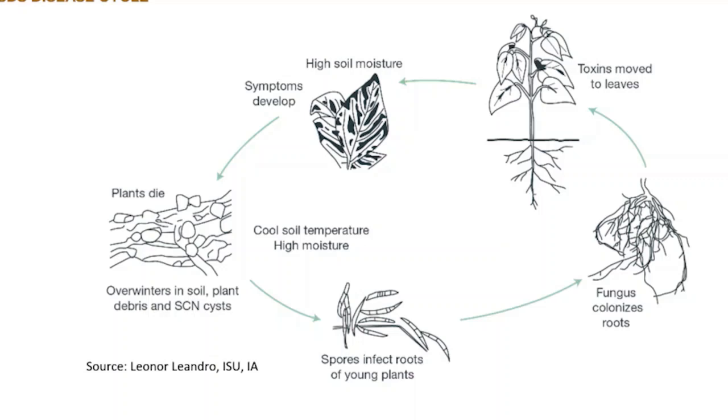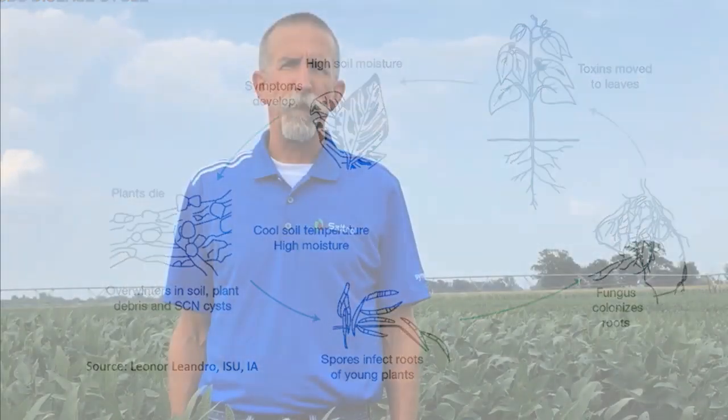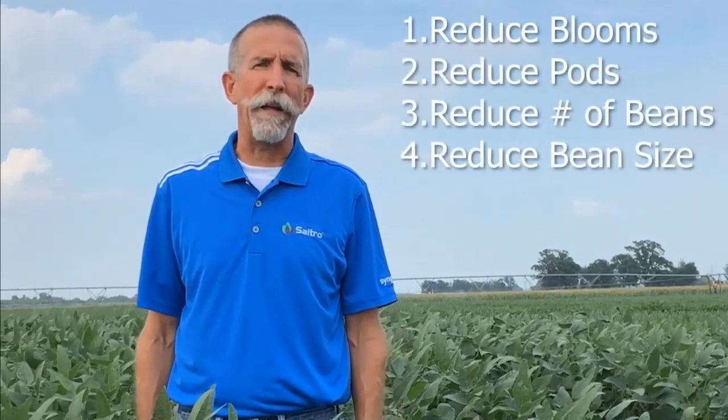The earlier this disease comes into your field, or the earlier you see it, the more it will impact your yield. Anytime you prematurely defoliate your soybean crop, obviously depending on the growth stage, you will have reduced flowers or blooms, or reduced numbers of pods.